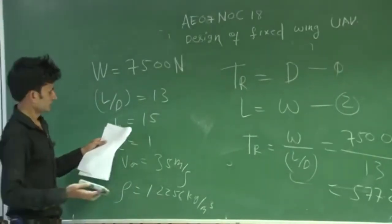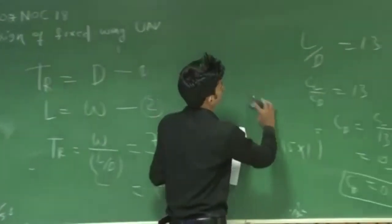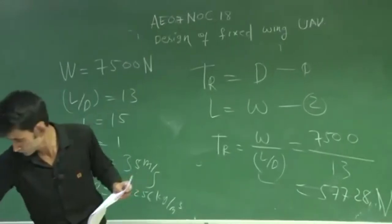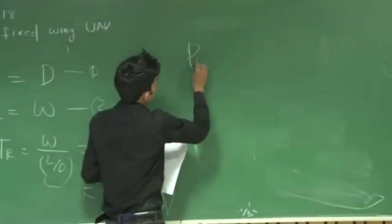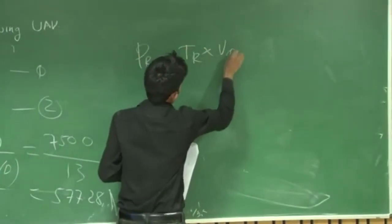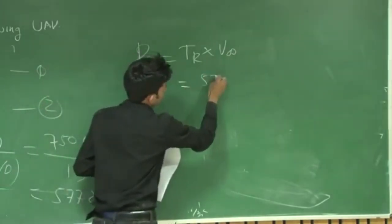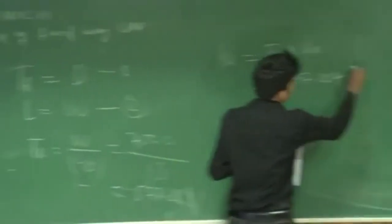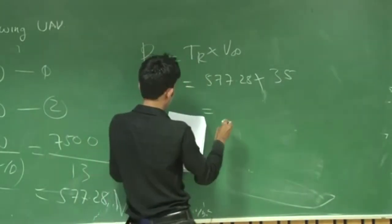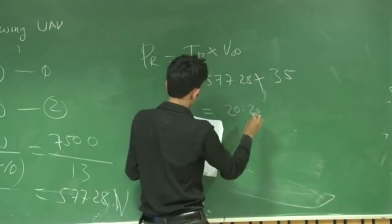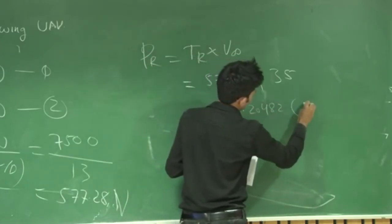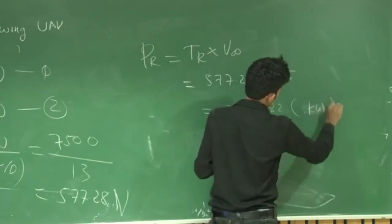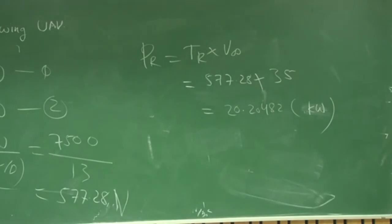In the fourth question, you have to find the power required. Power required is nothing but thrust required multiplied by velocity. Thrust required is 577.28 N and velocity is 35 meter per second, which gives 20,482 Watt, or approximately 20.482 kilowatt. This is your answer for the fourth question.